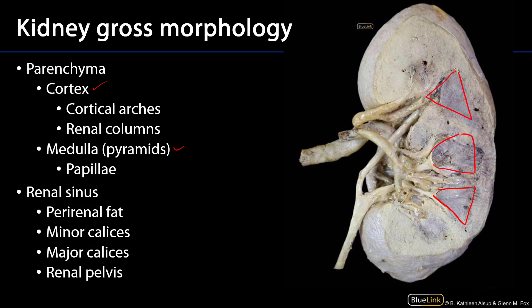The portions of the cortex that come between the bases of the pyramids and the renal capsule are known as the cortical arches, and the portions of the cortex that interleave between the pyramids are known as the renal columns.